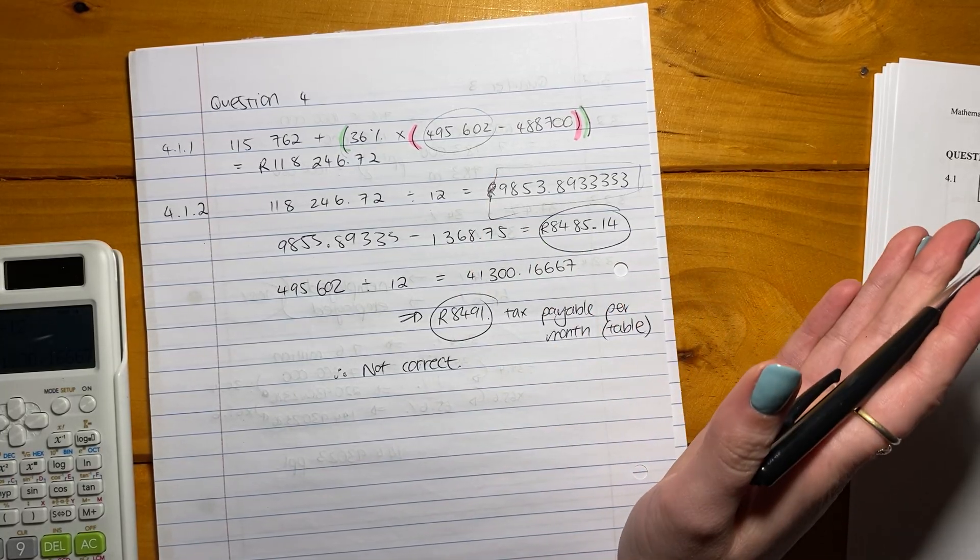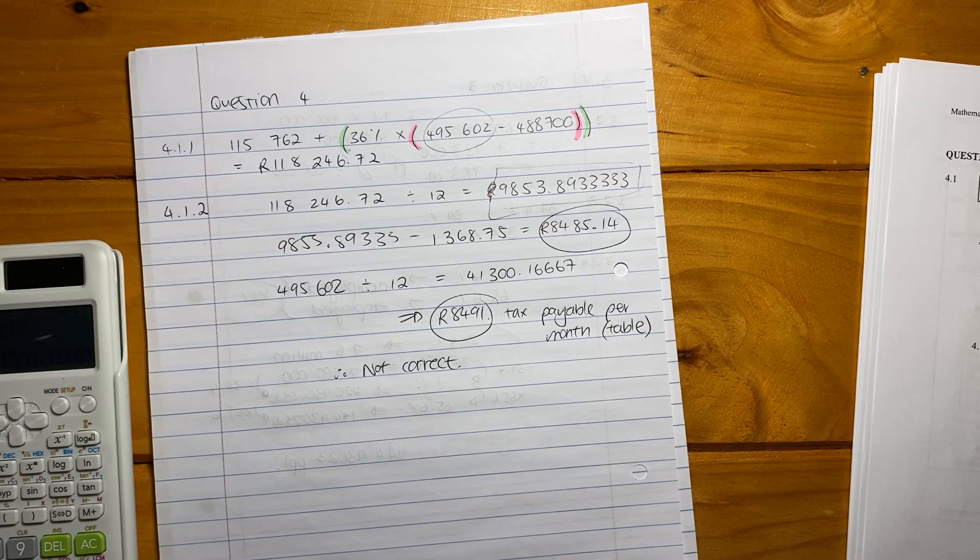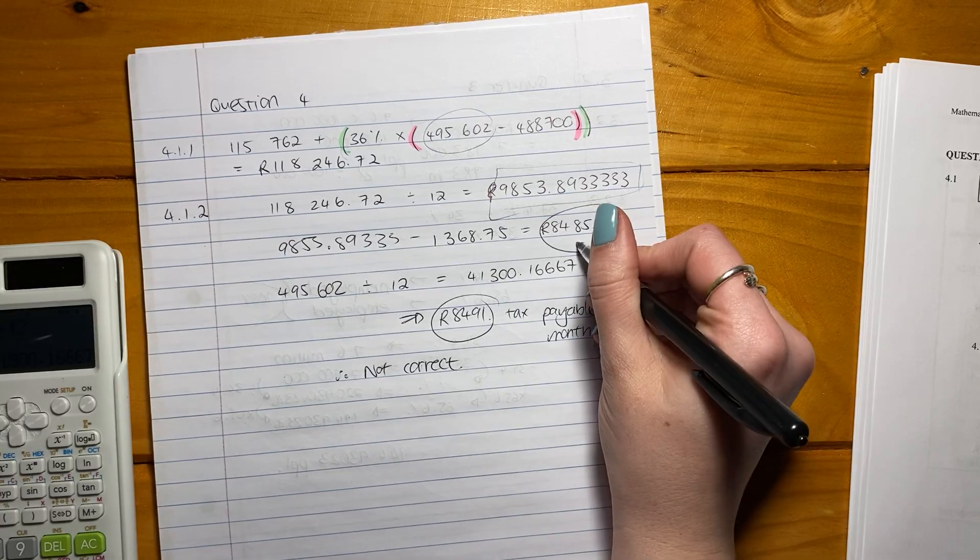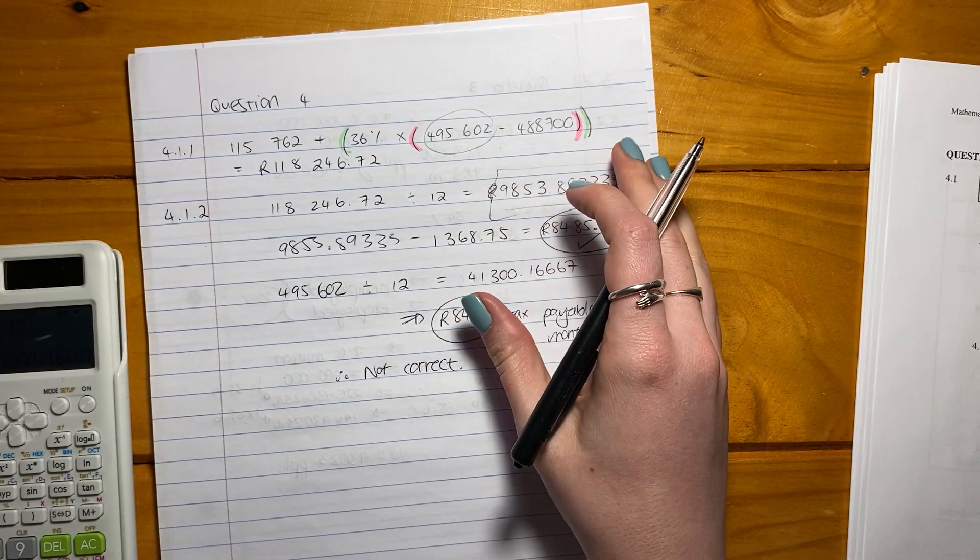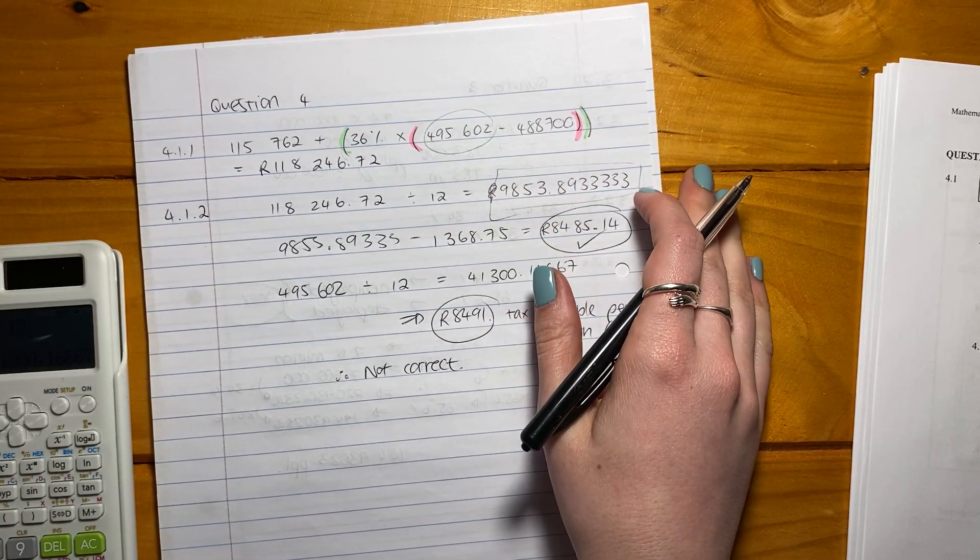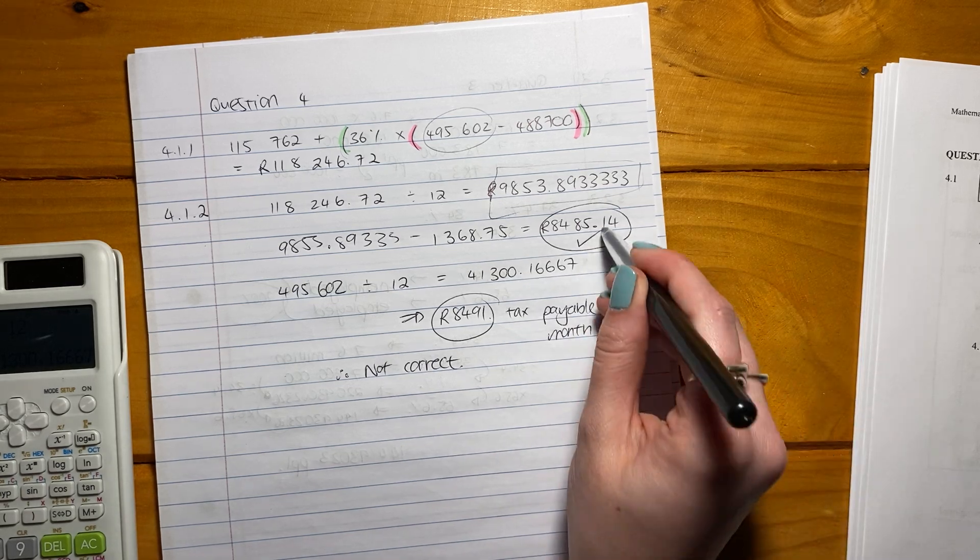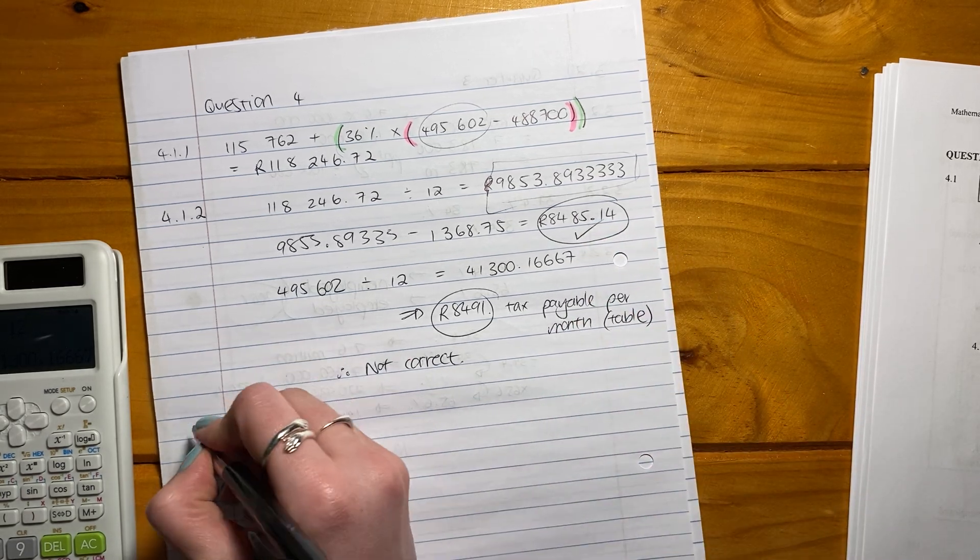So they're not the same. Yes, they're very close. And you'd be right in saying they are close, but they're not the same. So this is the accurate one because that's the calculation one. This is just from the table where someone's done like an average calculation. So someone else has done the calculation for Mr. Lowe. So actually, it's more accurate to do the calculation himself.